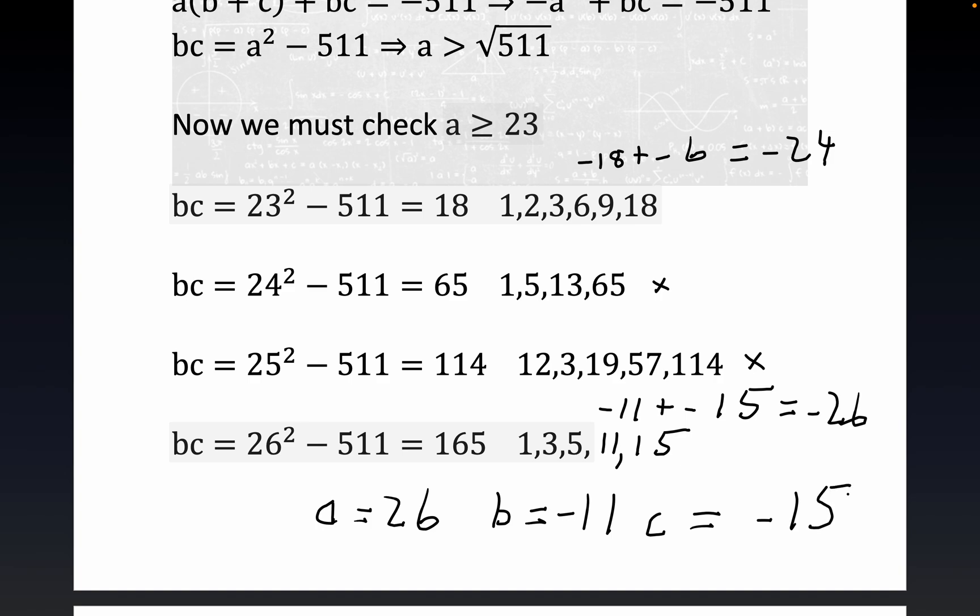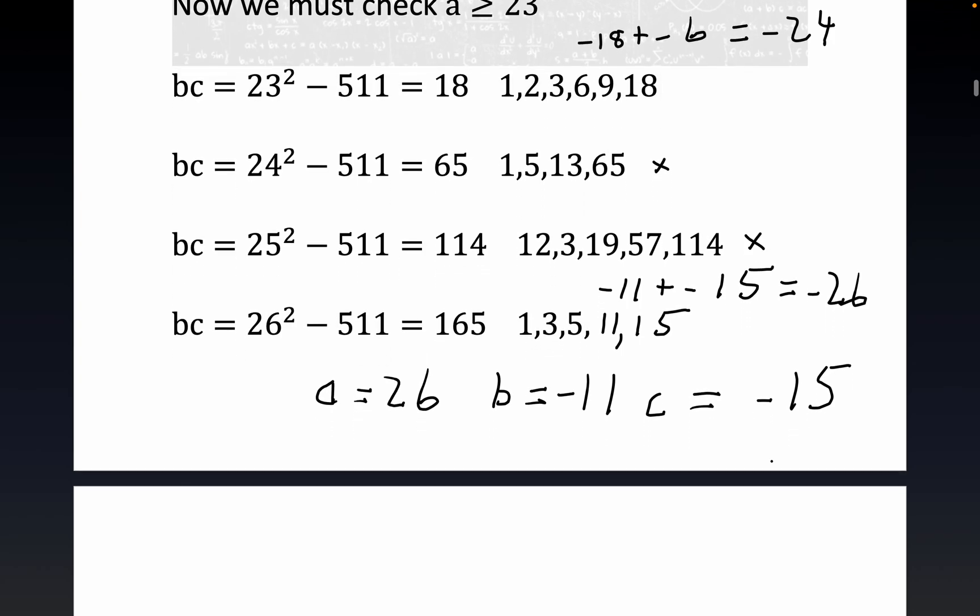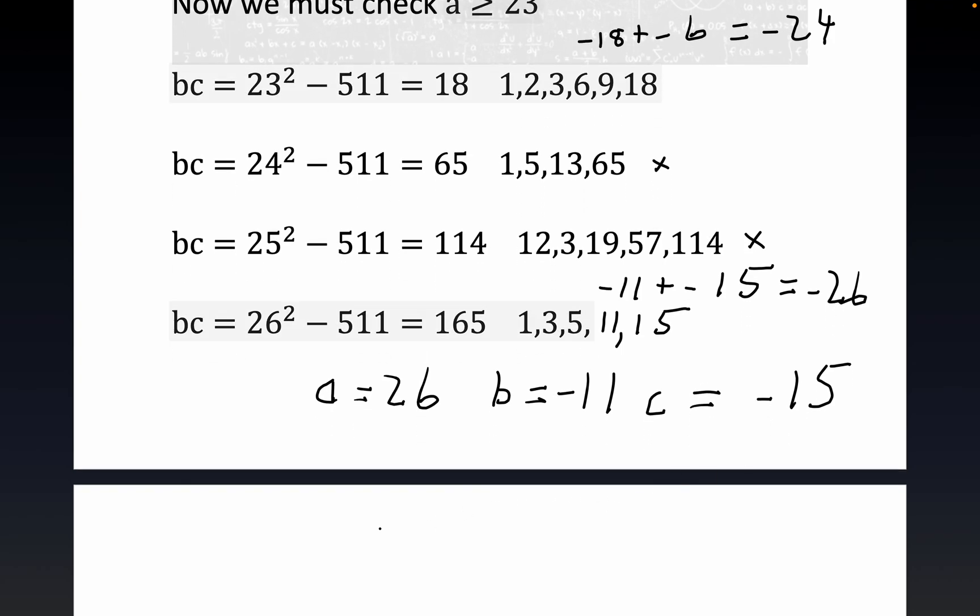By the way there's another one. You could also try this and get the same sum of zeros. a could be equal to negative 26, and then that would mean b equals 11 and c equals 15. As far as I know those would be the only two and they would have two separate constants just differing by sign.